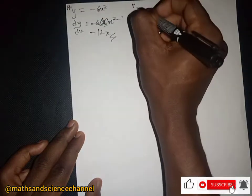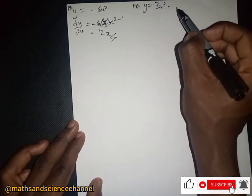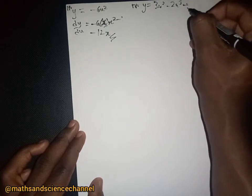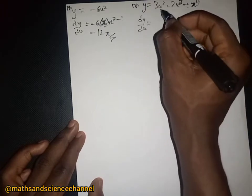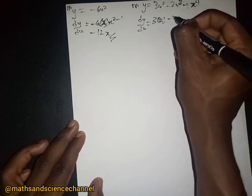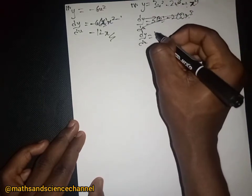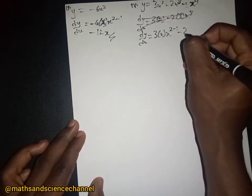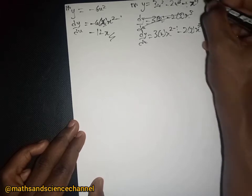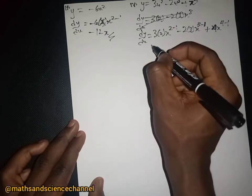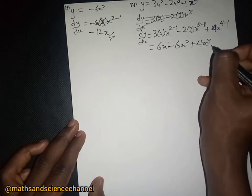Now example 18: y equal to 3x squared minus 2x cubed plus x to the power 4. The dy/dx will be — 3 multiplied by 2, minus 2 multiplied by 3 for x to the power 3 minus 1, plus 4 for x to the power 4 minus 1 — and we get 6x minus 6x squared plus 4x cubed.